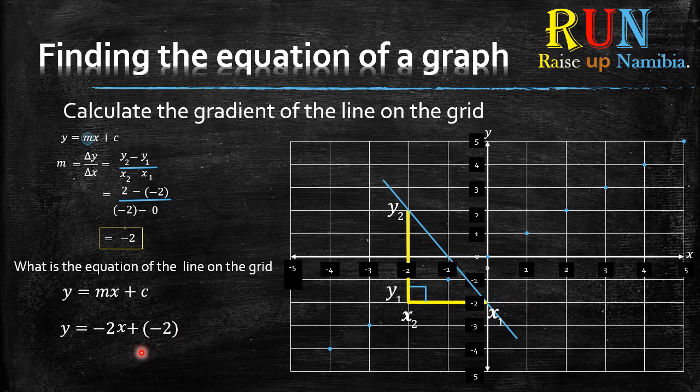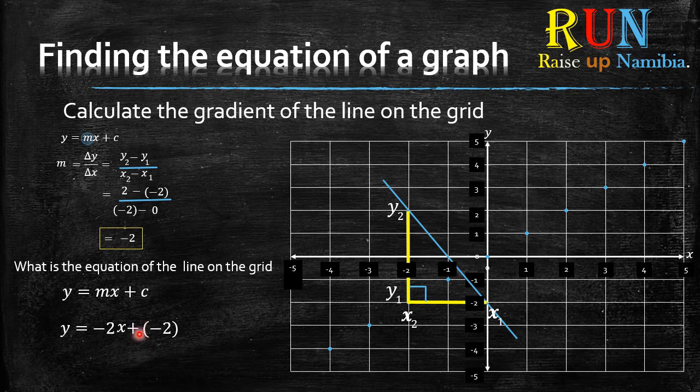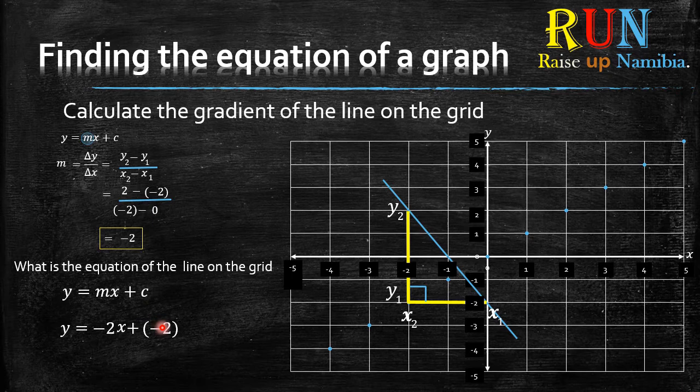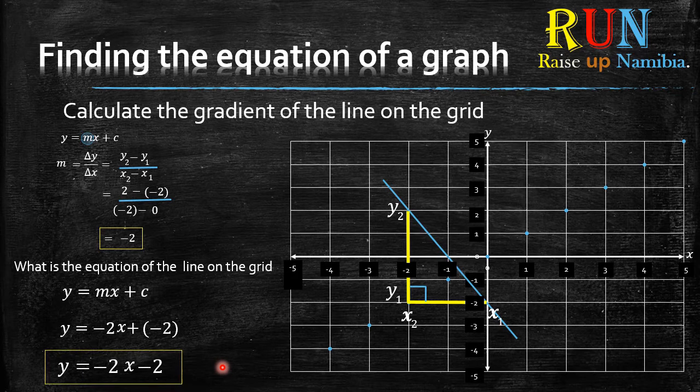And then you know that it's like there's an invisible one over here. So if you multiply out the bracket, one times negative two will just be negative two. So you can take away this positive sign. Then you just have y = -2x - 2. And that's basically your final answer. So this is the equation of the line on the grid.